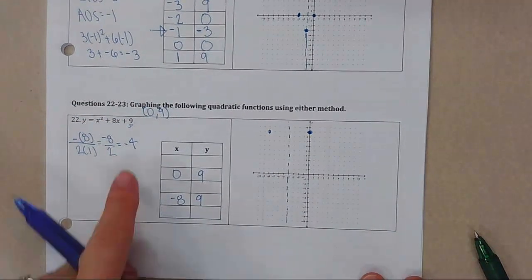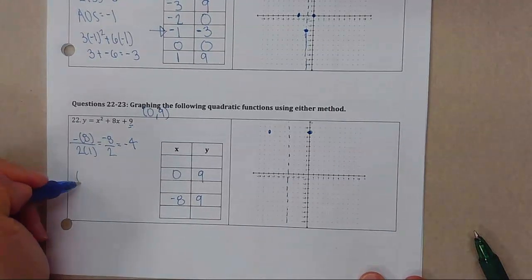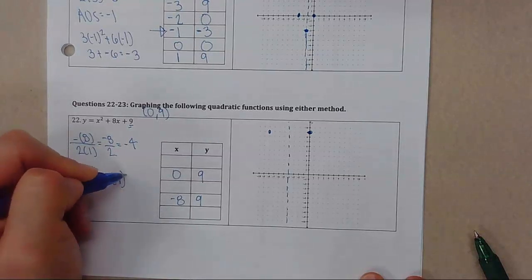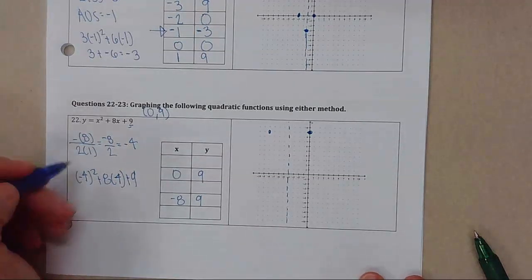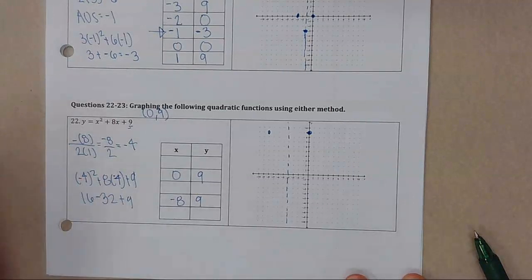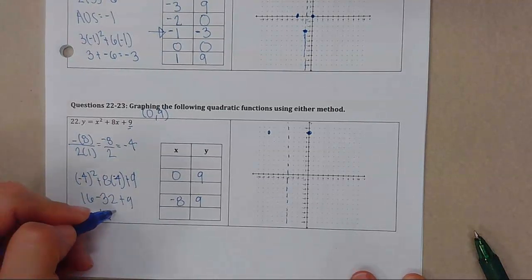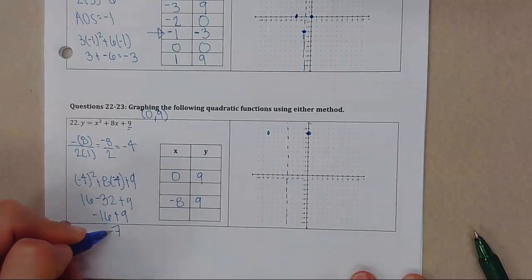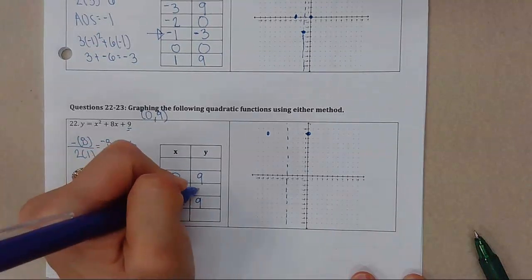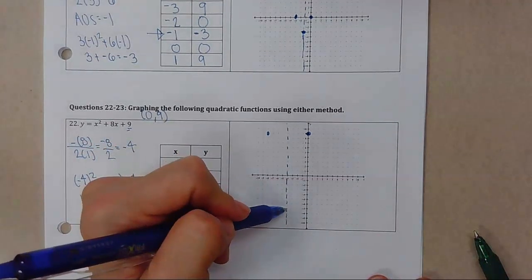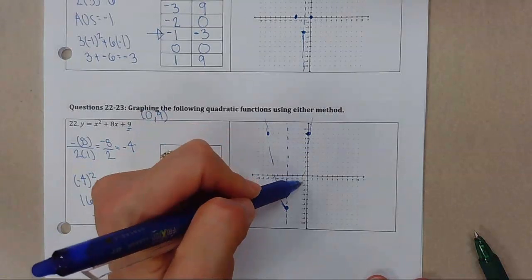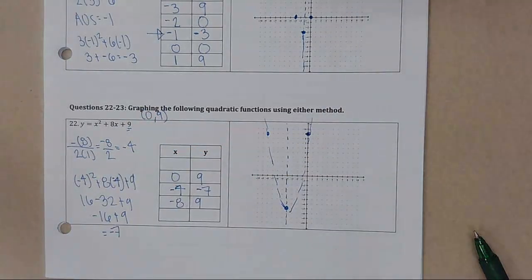Let's go ahead and find my vertex. I'm going to plug it in: negative 4 squared plus 8 times negative 4 plus 9. So 16 — this is negative 4 — minus 32 plus 9, will be negative 16 plus 9, which gives me negative 7. So when I plug in negative 4, I get negative 7. Let's go ahead and plot that. Now I have three points and a rough idea of what my graph looks like.